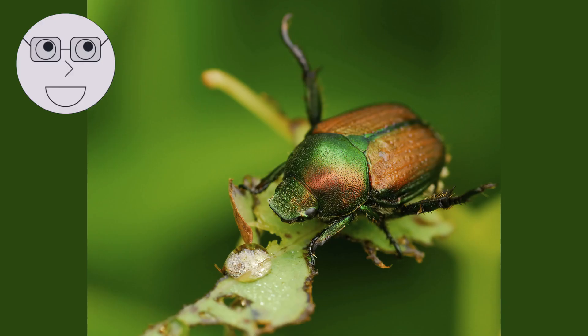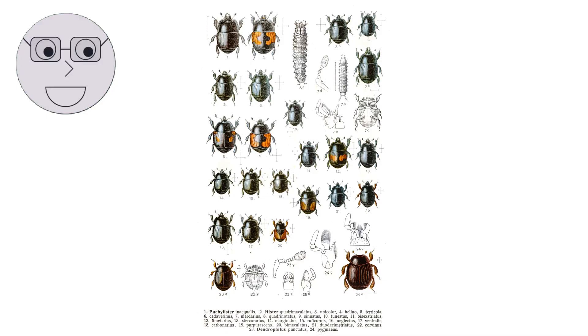The most diverse group of insects is the beetles, with over 400,000 known species. Beetles come in a variety of shapes and sizes, from the tiny featherwing beetles to the massive titan beetle. A variety of beetles, including the rhinoceros beetle and the ladybug.